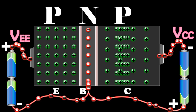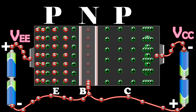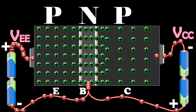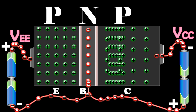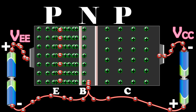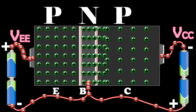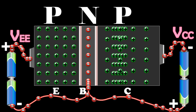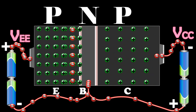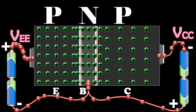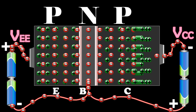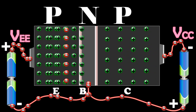The holes diffuse through the base. These holes take a very small time to flow through this region before they reach the depletion region. During this time, a very small number of holes recombine with an equal number of electrons in the base, because the base is lightly doped and very thin. This number is very small. The loss of total number of electrons per second is made up by the flow of an equal number of electrons from the negative terminal of VEE into the base. The flow of these electrons constitutes the base current IB.